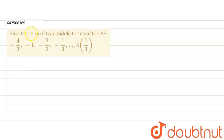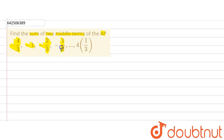The given question says: find the sum of two middle terms of the AP. We are given the following AP: minus 4/3, comma minus 1, comma minus 2/3, comma minus 1/3, dot dot dot, 4 and 1/3. So this is the AP that we are given.